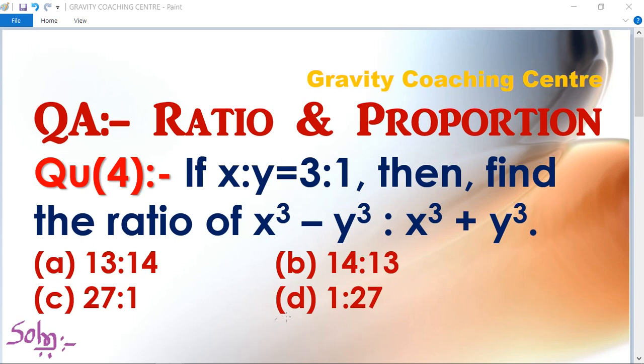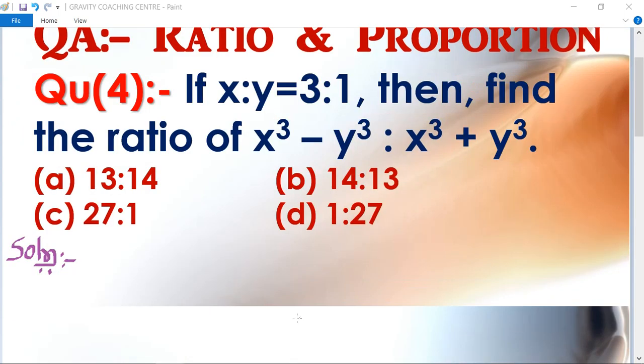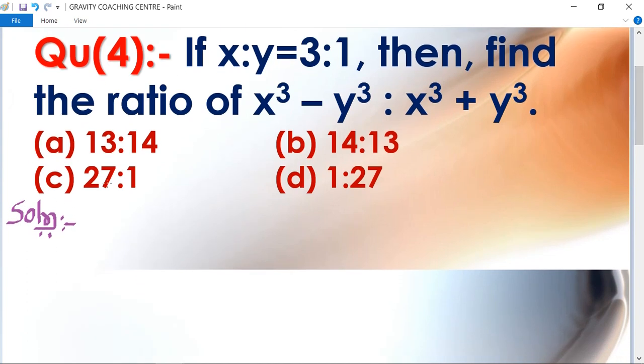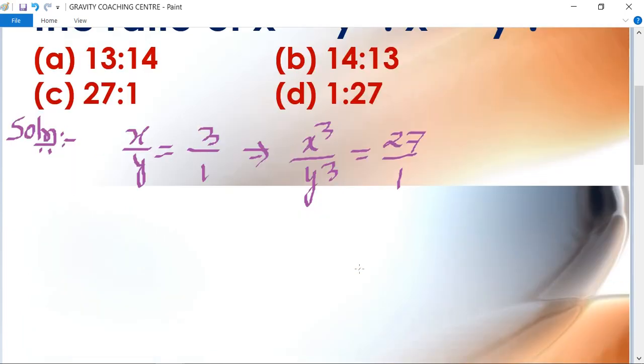In this question, x/y is given equal to 3/1. We cube both sides, so it becomes x³/y³ = 27/1.